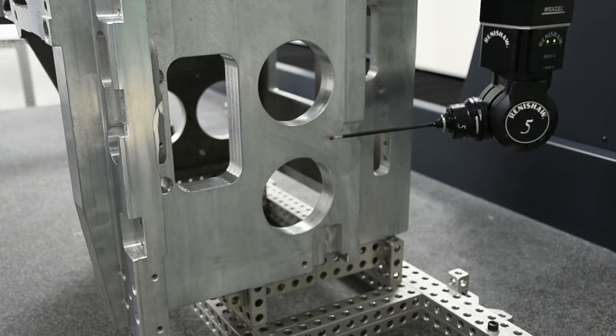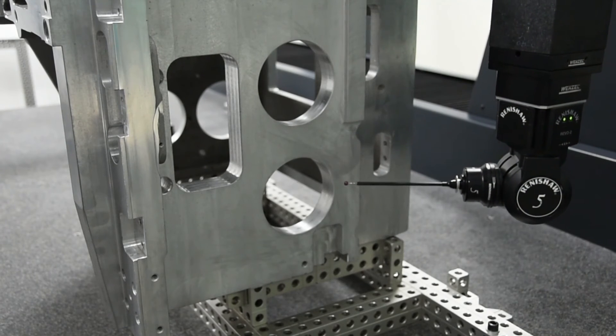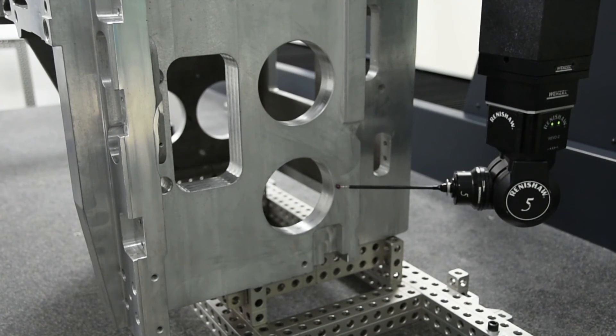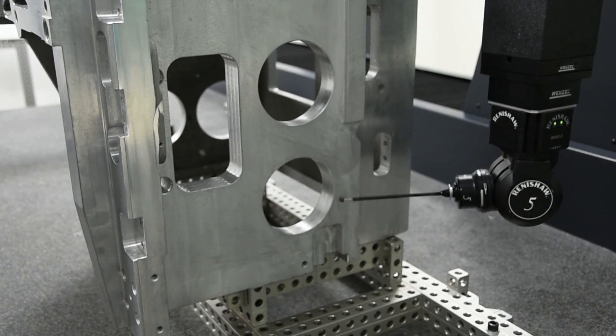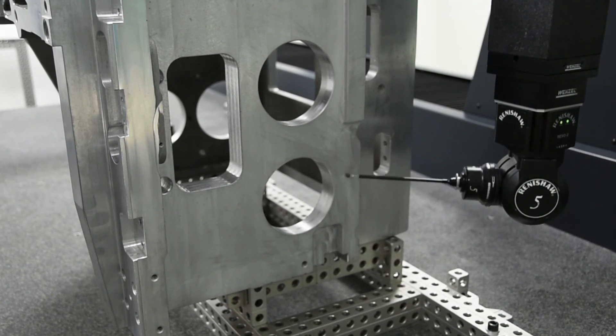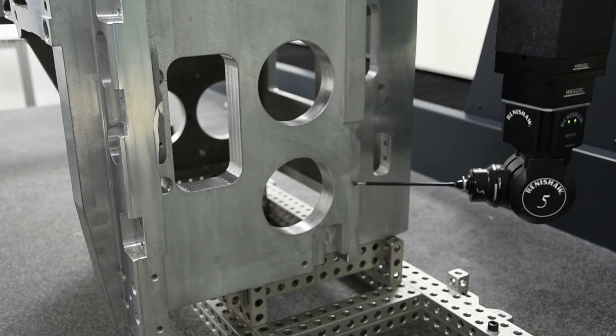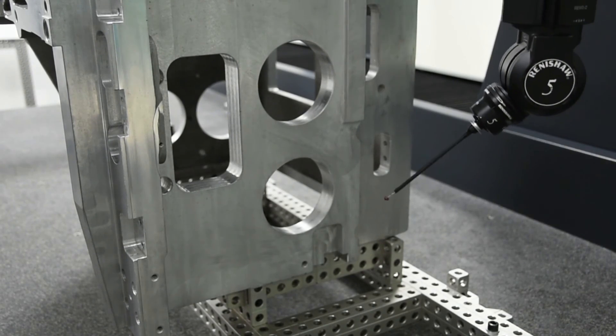In combination with the RSP2, the REVO 2 has an almost unlimited movement range. Wenzel measuring machines, in combination with the REVO, stand for an optimal connection between accuracy, speed and reliability.